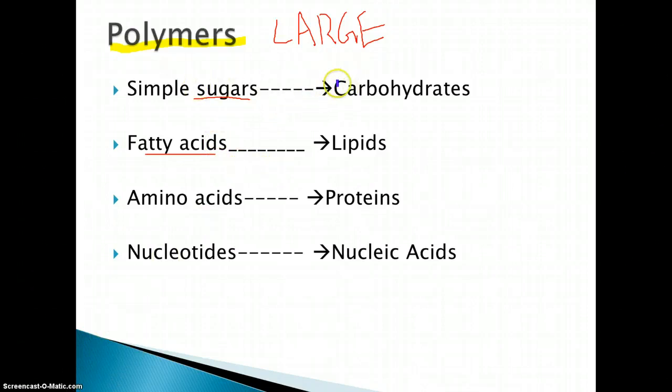But simple sugars make carbohydrates. You've probably heard of eating pasta before a big race or a big athletic competition because carbohydrates give a lot of energy. Then we have fatty acids, which is the monomer, which make lipids. These are the fats, the oils and butter and all of that.